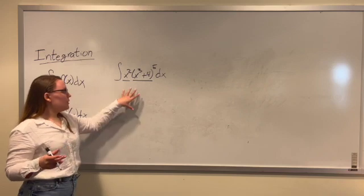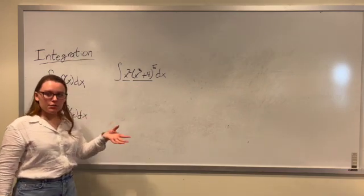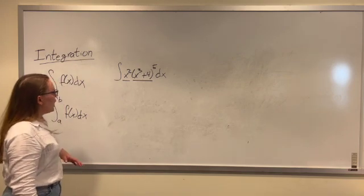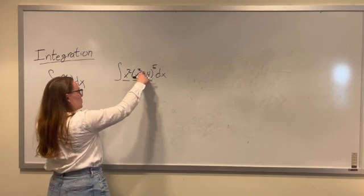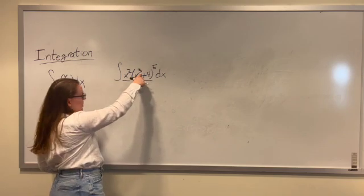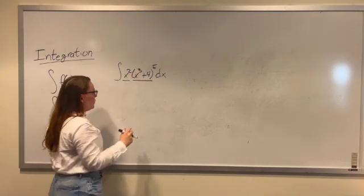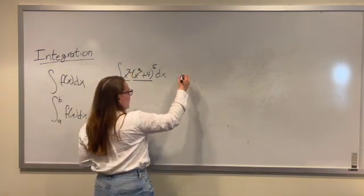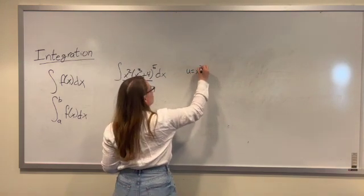Now, knowing which one to assign as u kind of just comes with practice. But for this one I see that this inside value here, our x cubed plus 4, the exponent here is greater than this exponent. So we're going to assign this one as our u value. So we're going to say u is equal to x cubed plus 4.